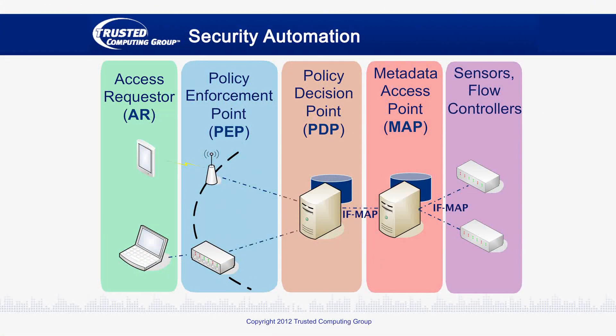Security automation, on the other hand, operates by having all your security systems share information through standard protocols, so they can provide automated analysis and response. As you can see in this diagram, information is shared through a common protocol named IFMAP. The security systems use IFMAP to store information in a database called a metadata access point, or MAP, and to query that database or subscribe to changes to a specific record.